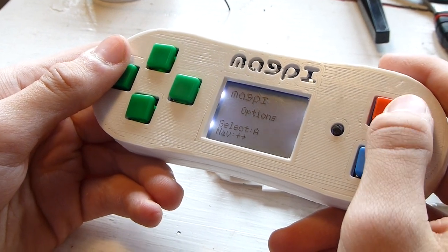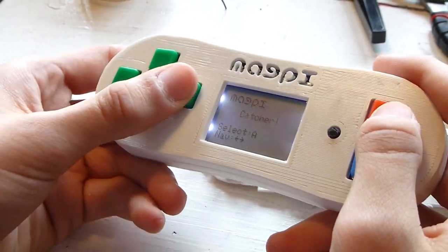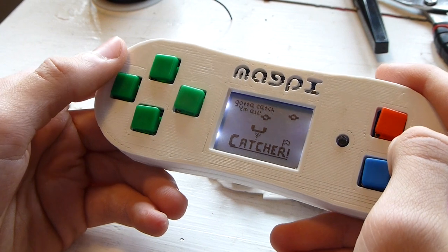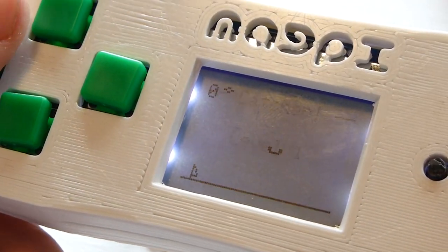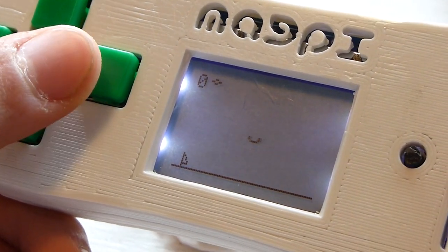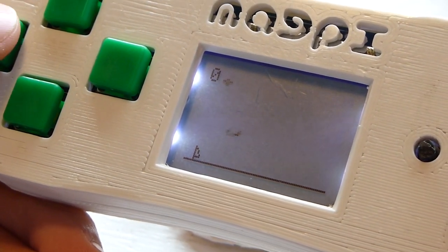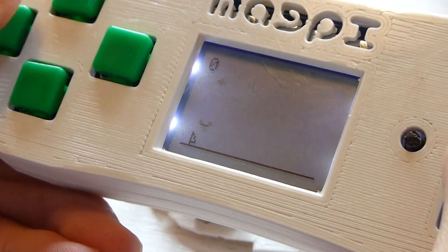We can select one using the A key, which is the red one. So let's play Catcher. This is the splash screen. You press A to skip that, and then we're playing.